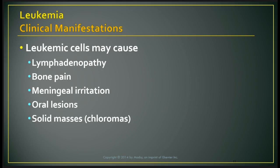Leukemic cells can cause lymphadenopathy — scans will show enlarged lymph nodes. Patients complain of bone pain. There may be meningeal irritation due to clumping of white blood cells slowing CNS fluid flow, similar to meningitis — causing neck pain and inability to move the neck. Patients may develop oral lesions and solid masses called chloromas, which are collections of leukemic cells.